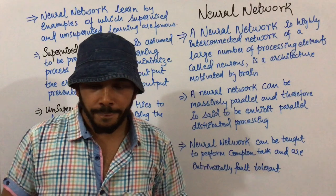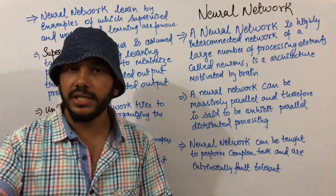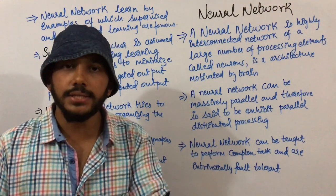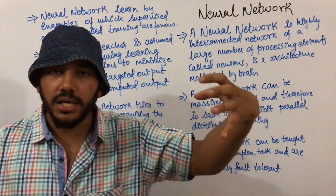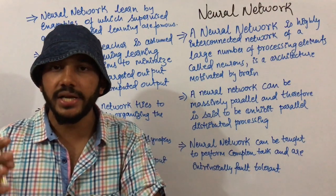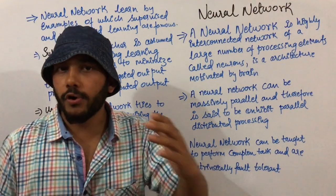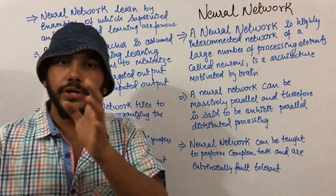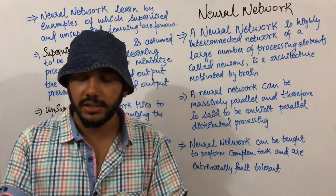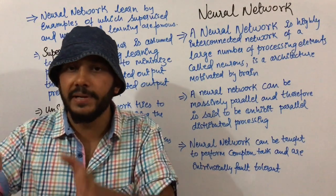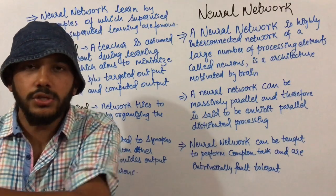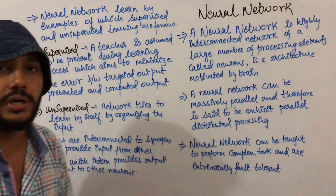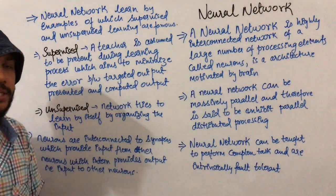When you touch a hot cup of tea, the neurons at the tip of your finger receive the input that a hot sensation has been touched. This is the input for the first neuron; it then passes the information to the next neuron as output — that something hot has been touched — and this passes onward until it reaches the brain. This is how neural network theory developed.